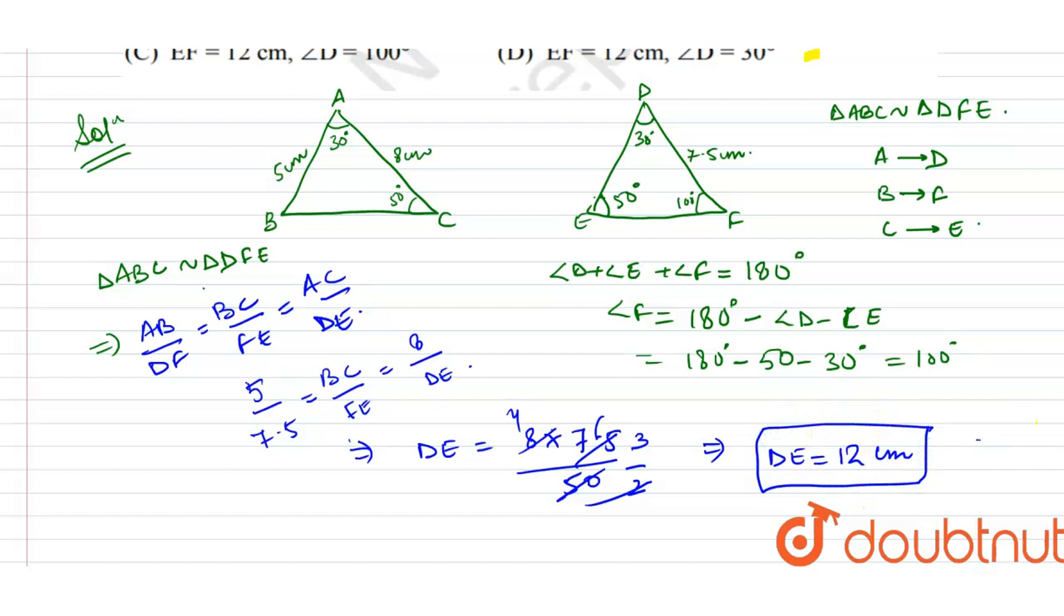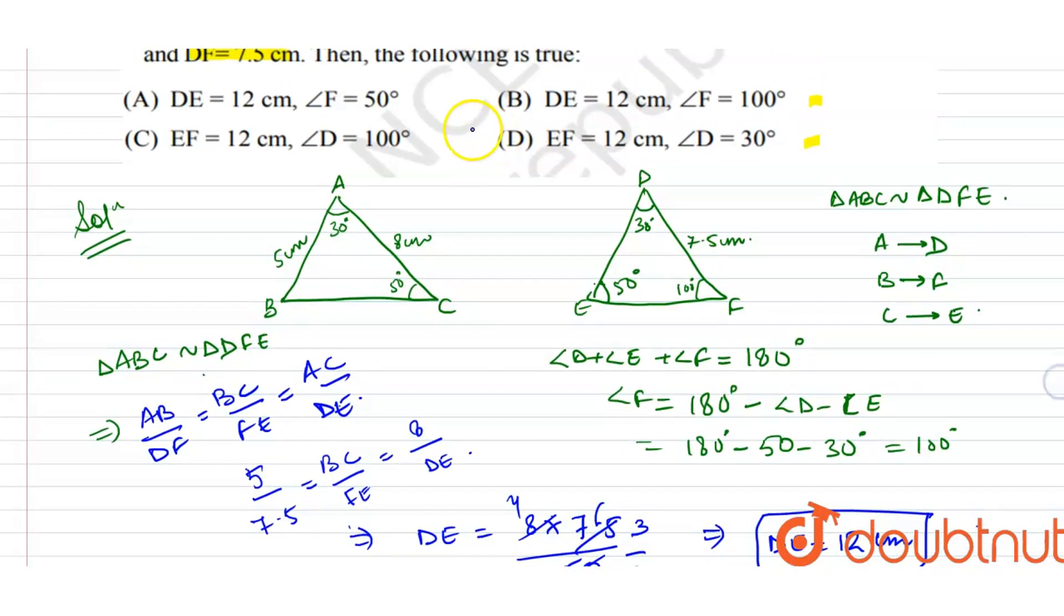So now which option is correct? Our correct option is B. DE is 12 cm and angle F is 100 degrees. Thank you.